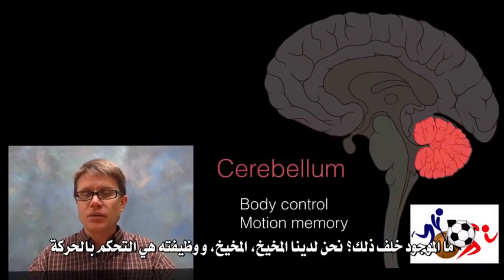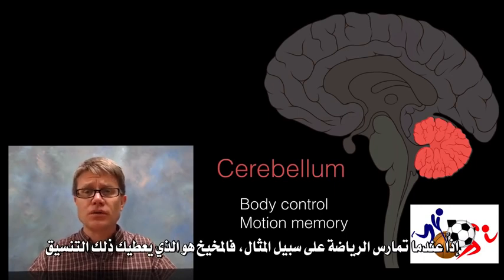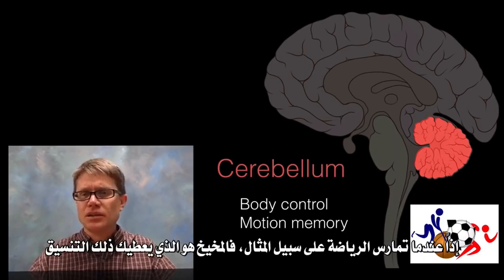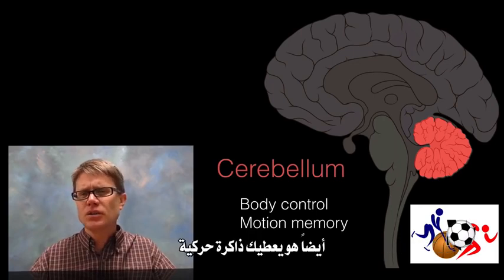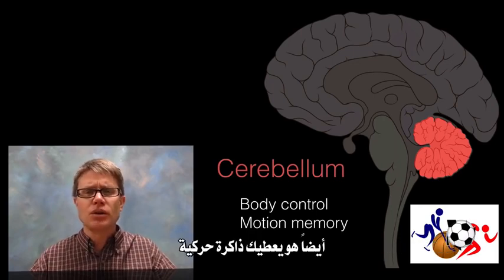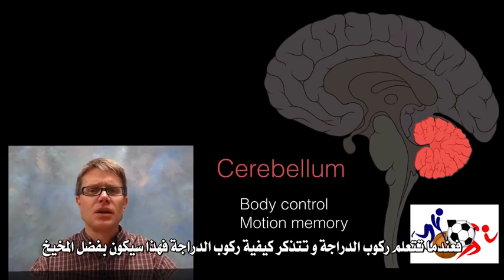Behind the brain stem we have the cerebellum. Its function is motor control — it gives you coordination during sports, for example. It also provides motor memory: when you learn to ride a bicycle and remember how to do it, that's thanks to your cerebellum.